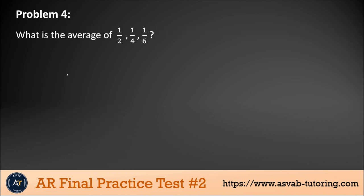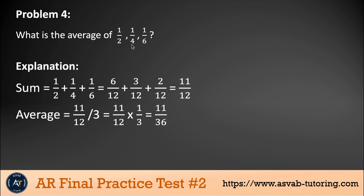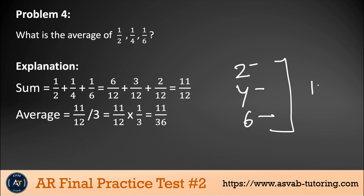Next problem: what is the average of 1/2, 1/4, and 1/6? Average means you add the numbers or fractions and then divide by the count. You have 3 fractions, so add them up and divide by 3. To add fractions, first find the common denominator. The common denominator of 2, 4, and 6 is 12. Find the equivalent fractions: 6/12, 3/12, and 2/12.